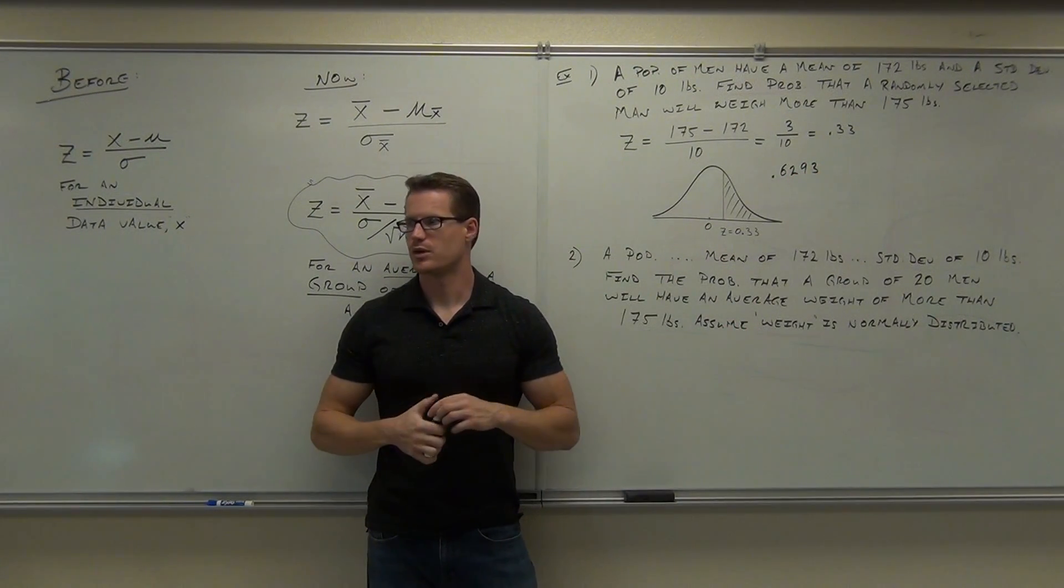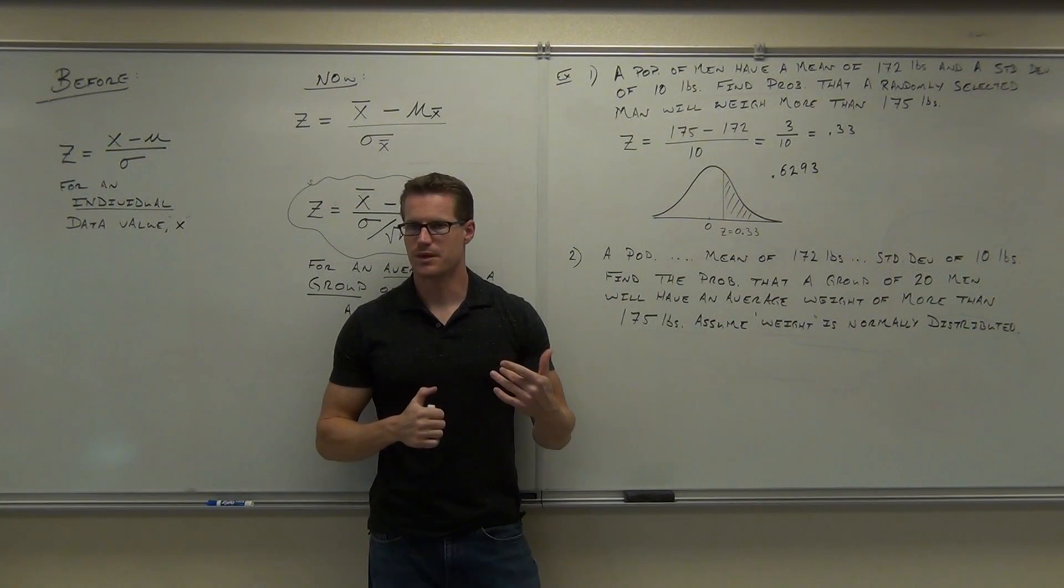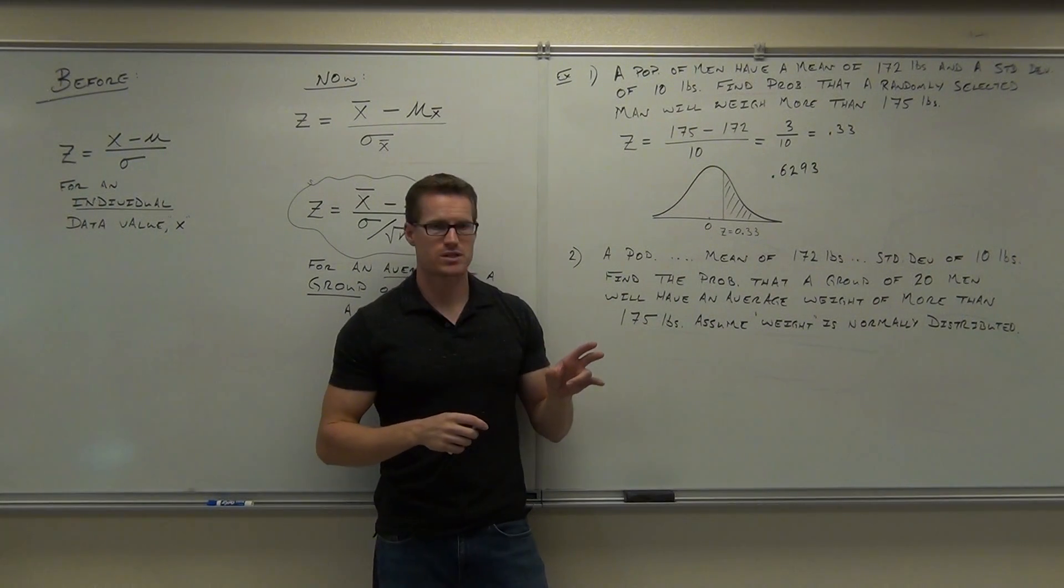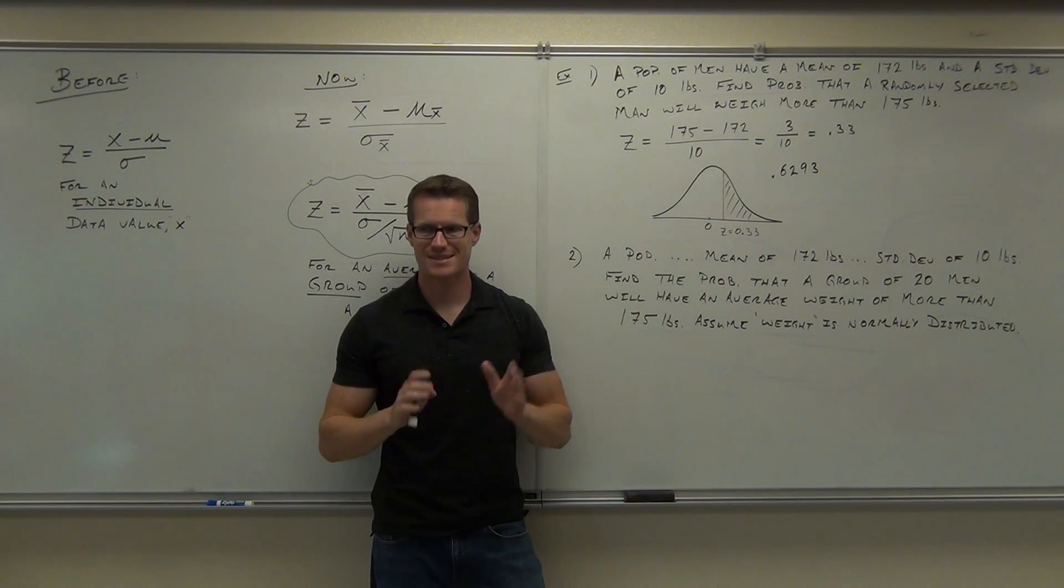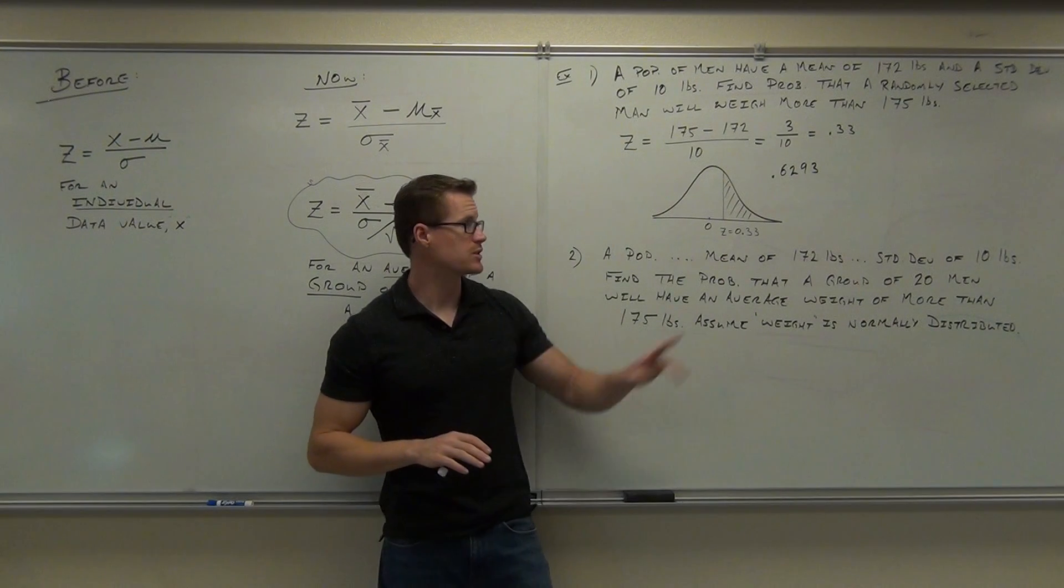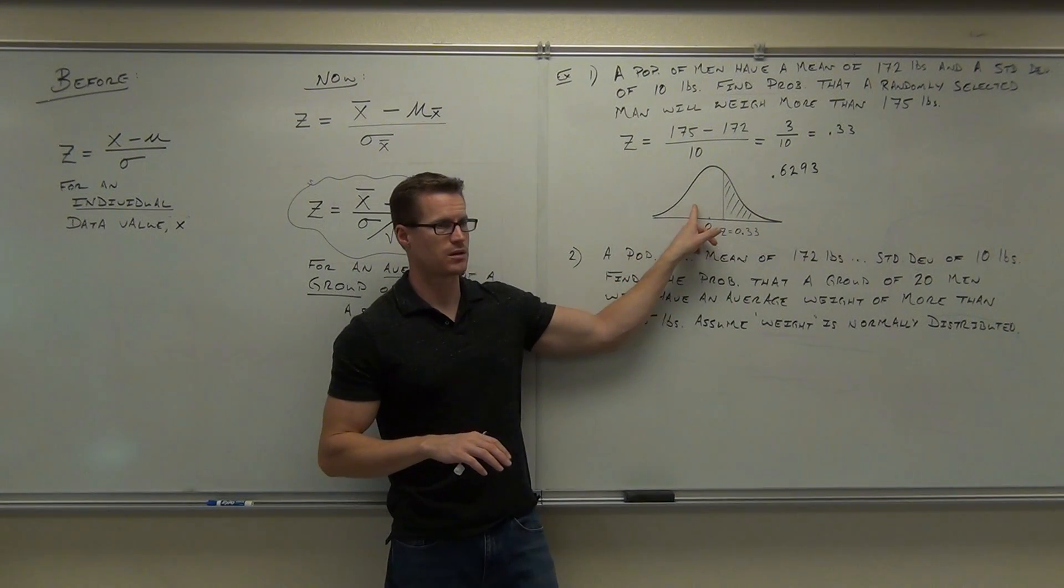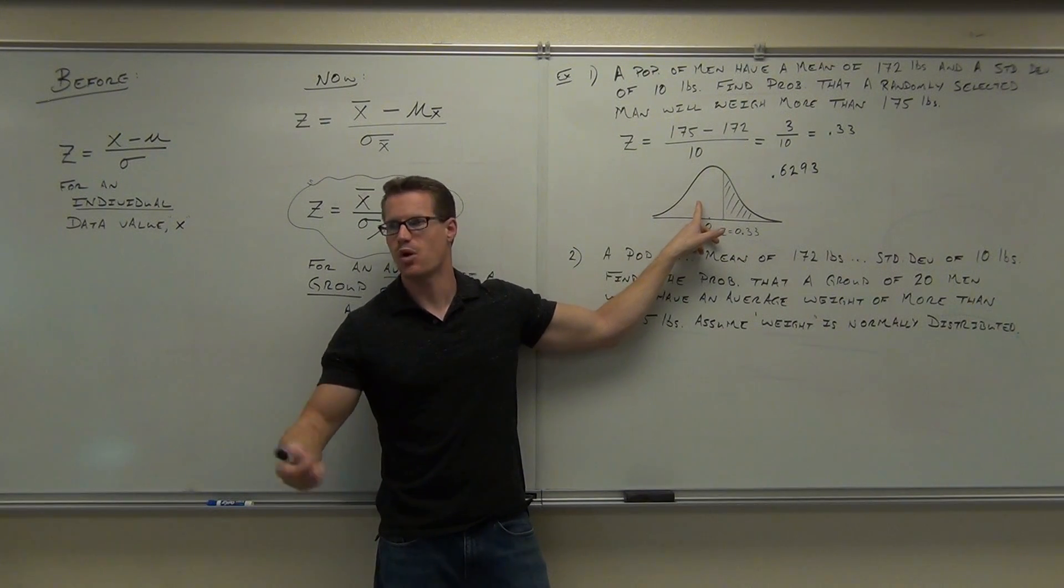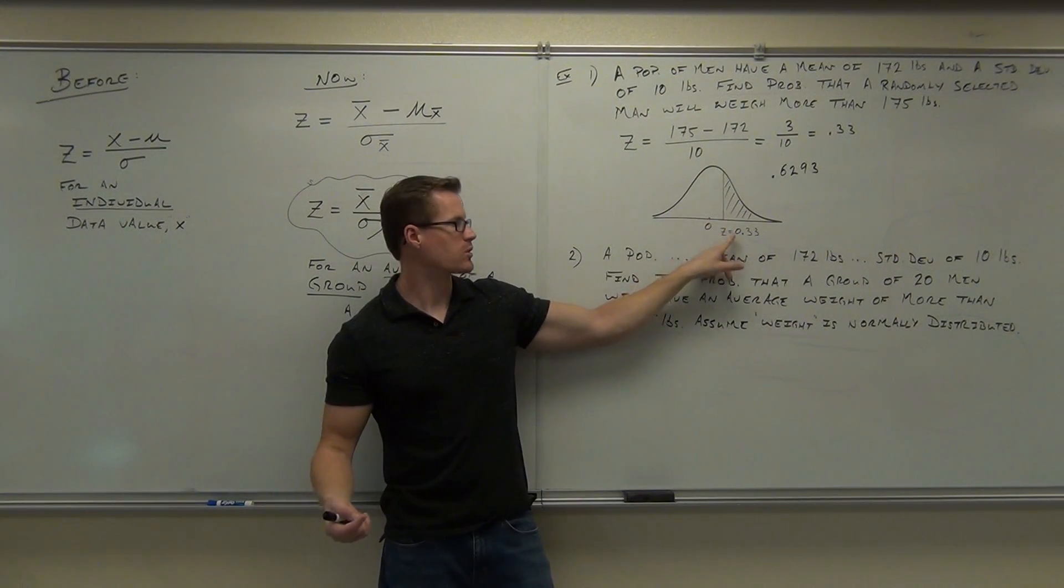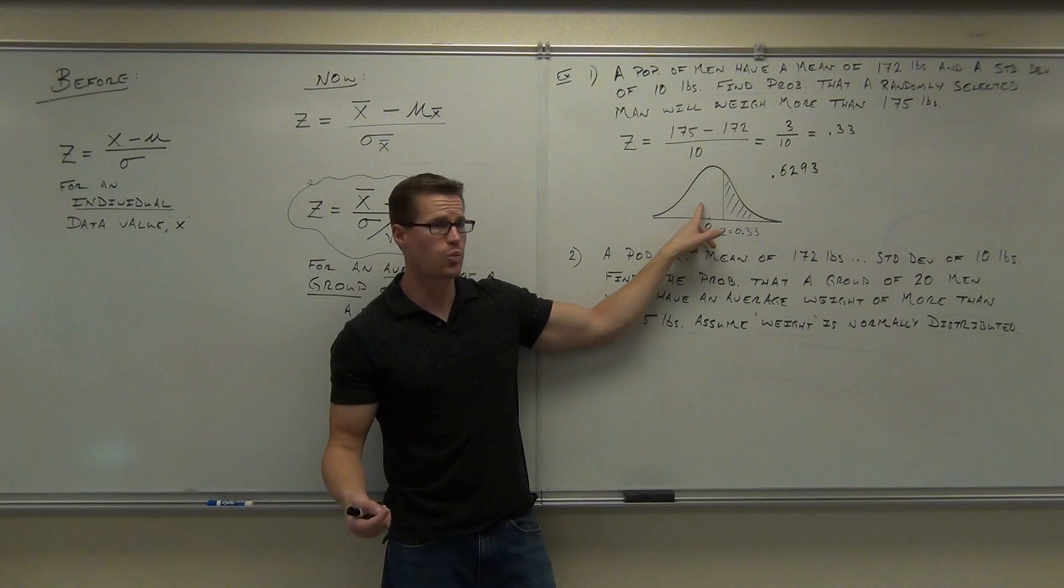Okay, now watch. If you look at 0.33, you do find 0.6293, correct? The question is, what side did you just find? Did you find the right side or the left side? The left side. Your table will only give you the left side. You have to be smarter than your table.